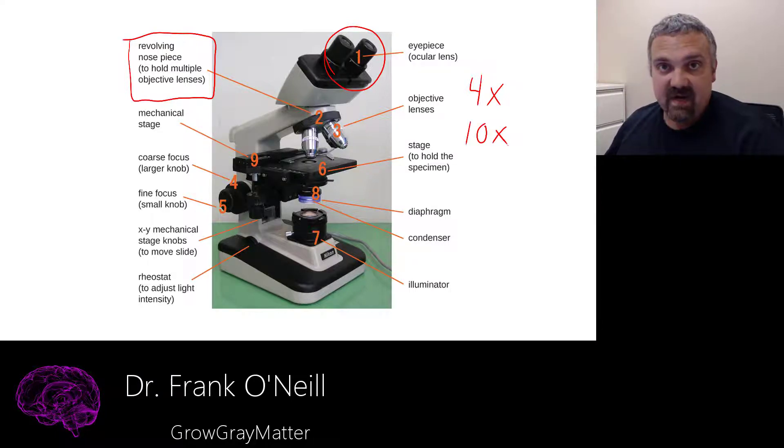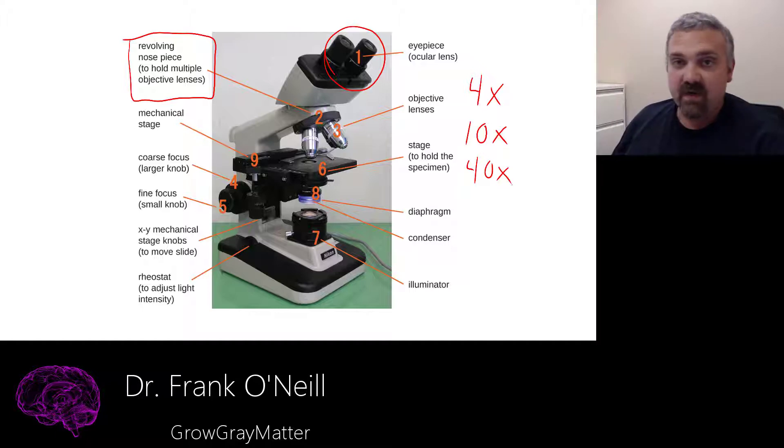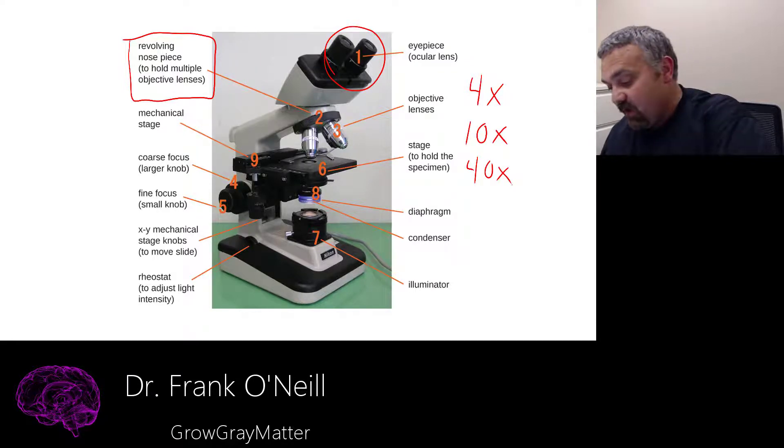The third, the high dry power, which is called that because it's the highest magnification you can get without using immersion oil, hence it's dry, is going to give you a 40x magnification. And the oil immersion will give you a 100x magnification.